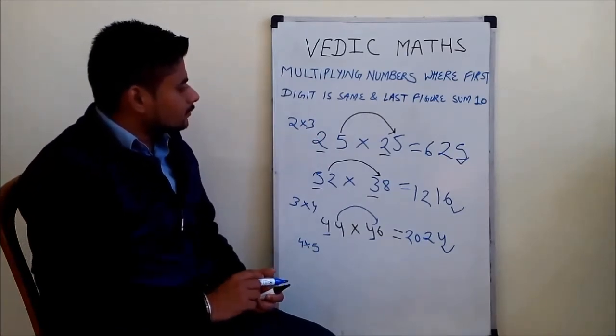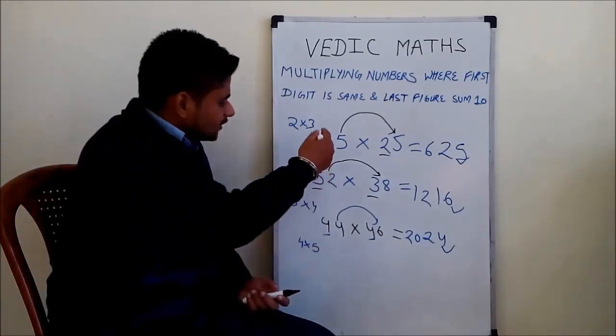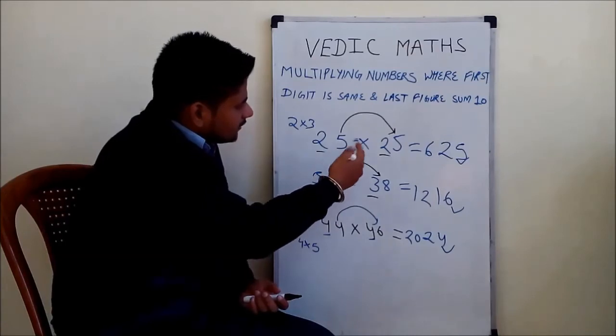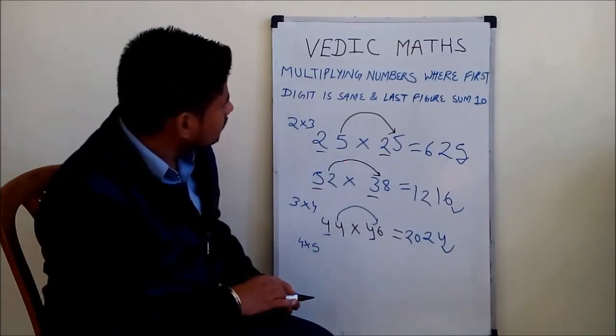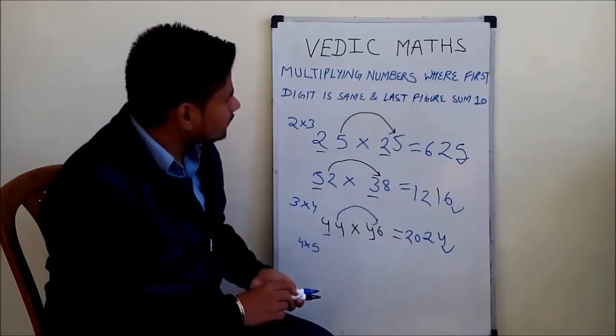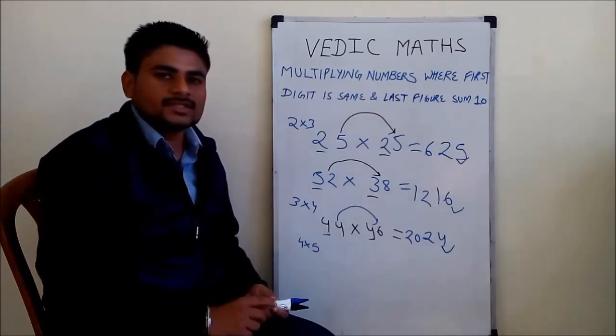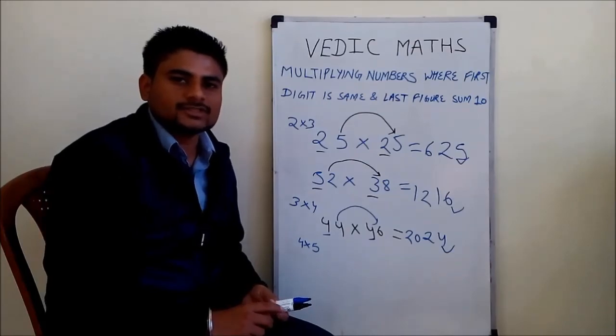This trick is applicable only to numbers where the first digit is the same and the last digits sum up to 10. This multiplication trick is used for these types of numbers. In another video we'll talk more about Vedic math tricks and multiplication tricks. Thank you for watching.